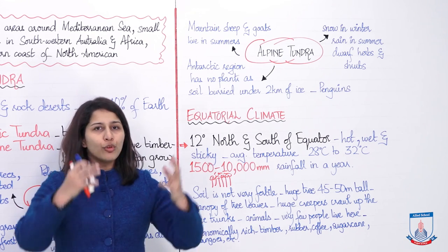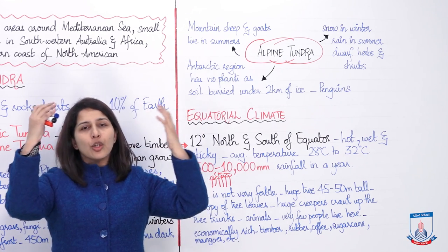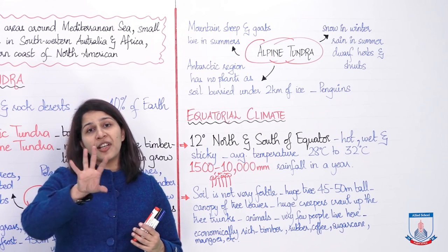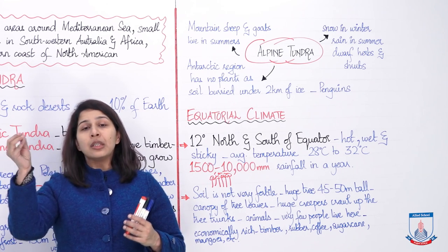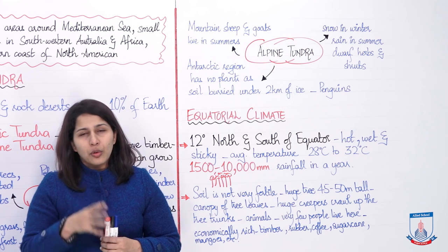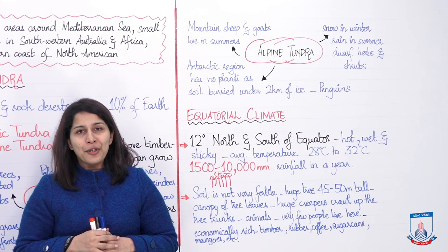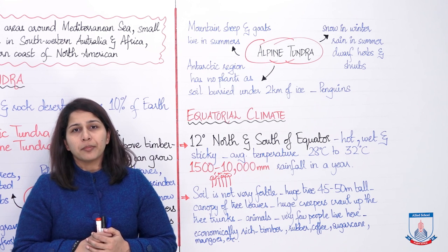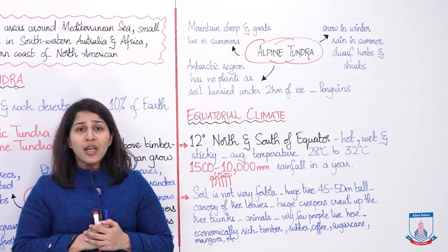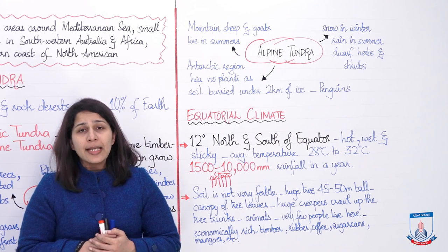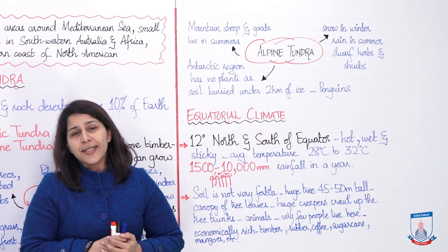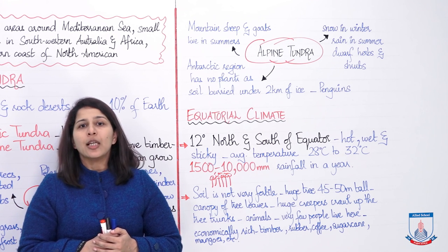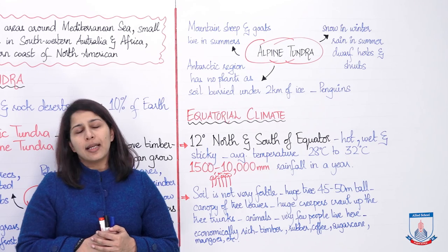Sirf hirangi wali baat yeh hai ki fruits usually top pe grow karte hain, but in such forests, sometimes the fruit even directly comes out of the trunk — thoda different hai na! That is why it is a different kind of forest. So here I'm going to end today's lecture. In the next lecture, we'll be discussing temperate grasslands, seasons, and we'll also discuss questions. Tab tak ke liye, Allah Hafiz.